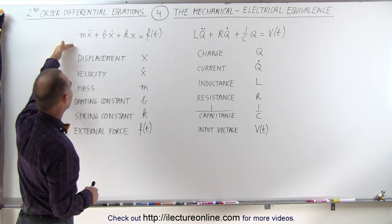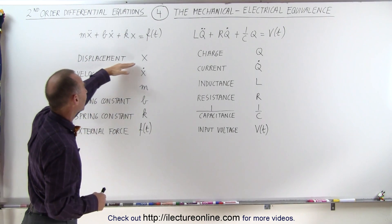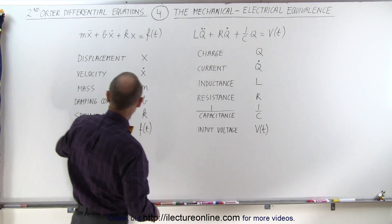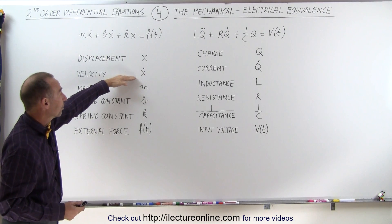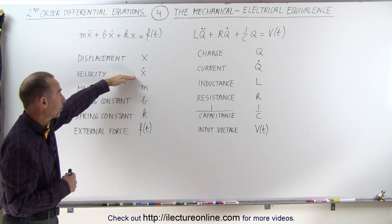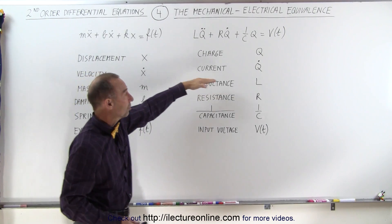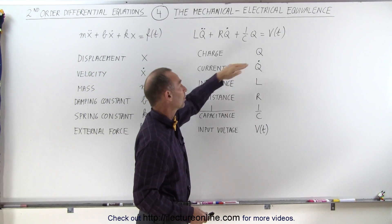Notice that in the mechanical system we have displacement x, and in the electrical system we have charge q. In the mechanical system we have velocity x dot, the derivative of displacement with respect to time, and in the electrical system we have the current, which is the derivative of the charge with respect to time.